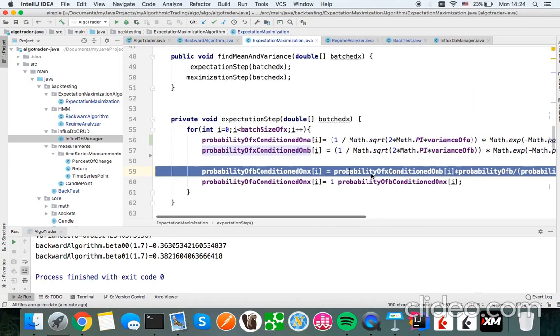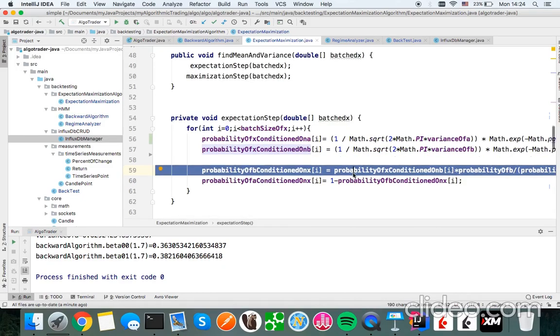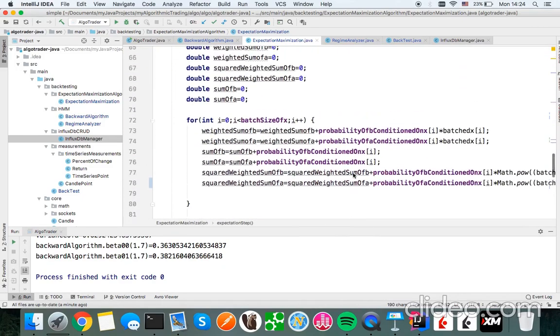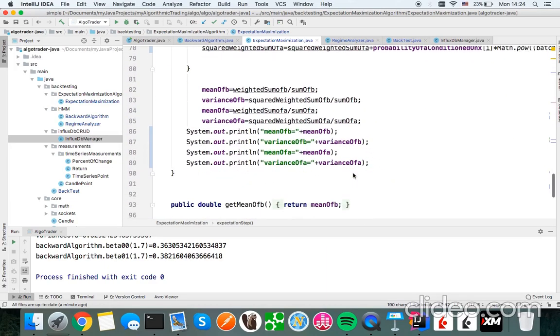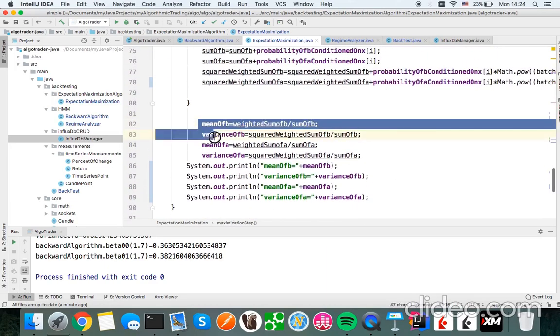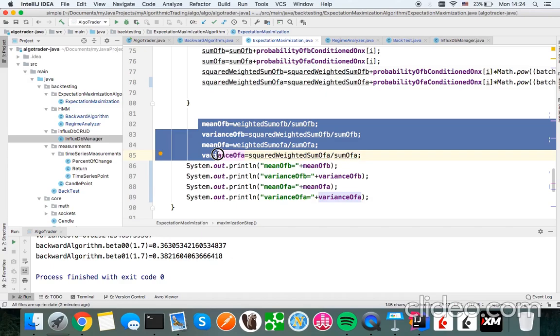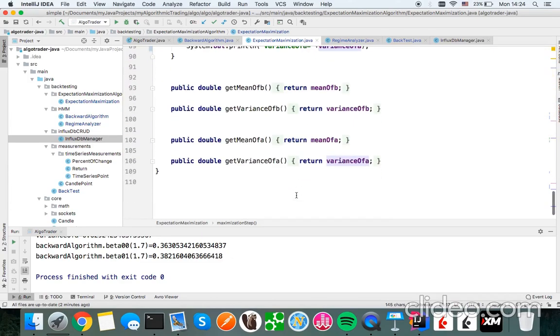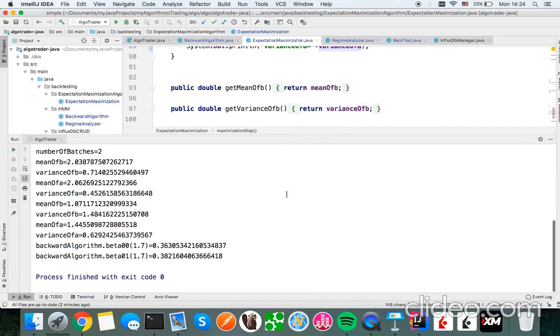In expectation maximization I have this posterior probability, as you're familiar with Bayes theorem, and I calculate those parameters. Each of these means of a and b are updated in different batches, and finally I have these results as you see. That's it.